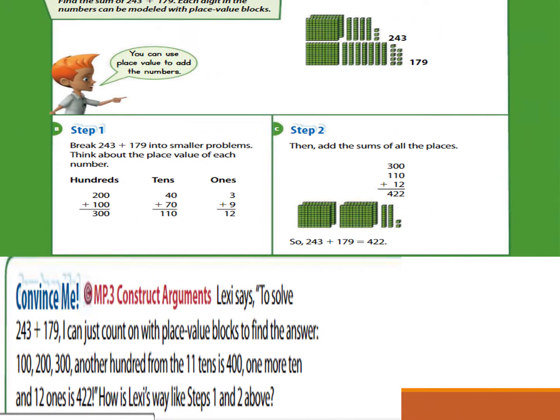Now open page 938 and follow me. Look at the first question: find the sum of 243 plus 179. Each digit in the number can be modeled with place value blocks. You can use place value blocks to add the numbers — we can draw the numbers. Look at the first addend, 243: draw 200, 4 tens, and 3 ones. After that, the second addend, 179: 100, 7 tens, and 9 ones. Then count on and add to find the total. We can break 243 and 179 into smaller problems.